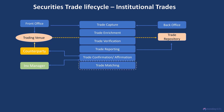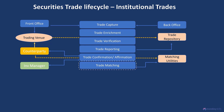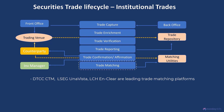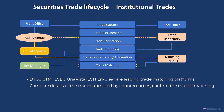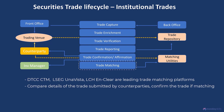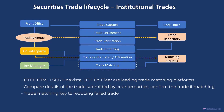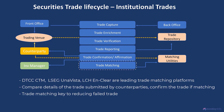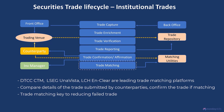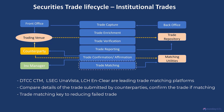Trade matching is key to reducing failed trades. Counterparties submit their respective trade instructions to a centralized trade matching system such as DTCC CTM, LSEG Univista, LCHN Clear, etc. Trade matching utilities compare and reconcile the trade instructions received from the buyers and sellers, brokers, or counterparties to determine if there is a match. This involves comparing various trade parameters including security identifier, quantity, price, trade date, settlement date, and counterparty information. The objective is to identify any discrepancies or mismatches and resolve them through exception handling and reconciliation. The trade matching process occurs after trade confirmation and before settlement.